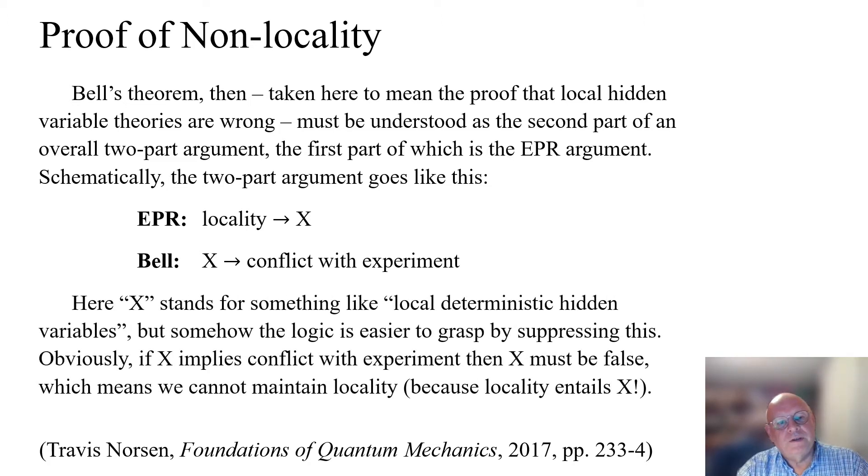Travis continues: here X stands for something like local deterministic hidden variables, but somehow the logic is easier to grasp by suppressing this. Obviously, if X implies conflict with experiment, then X must be false, which means we cannot maintain locality because locality entails X.